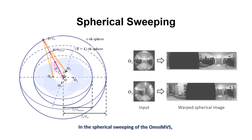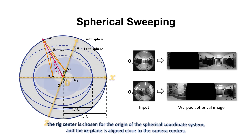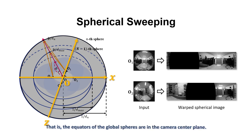In the spherical sweeping of the OmniMVS, the rig center is chosen for the origin of the spherical coordinate system. And the XZ plane is aligned close to the camera centers. That is, the equators of the global spheres are in the camera center plane.